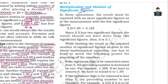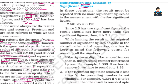Multiplication and division of significant figures: in these operations, the result must be reported with no more significant figures than the measurement with the fewest significant figures. For example, 2.5 has two significant figures, so the result should not have more than two significant figures. If the answer is 3.125, we represent it as 3.1.